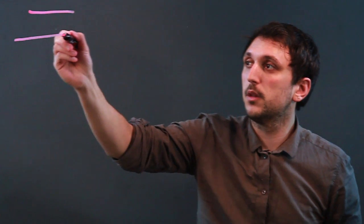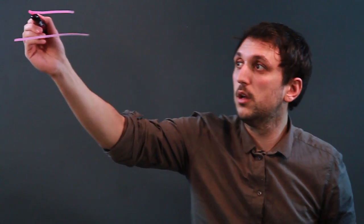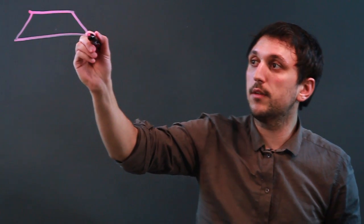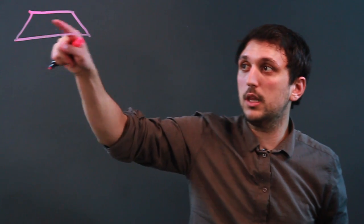So, for example, say these two sides are parallel, and then we have this leg and this leg. Now, the sides that are not parallel are called legs.